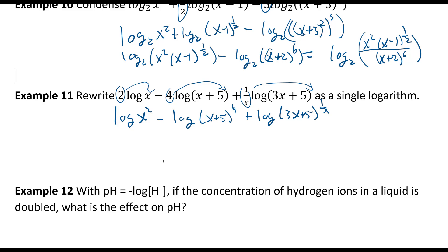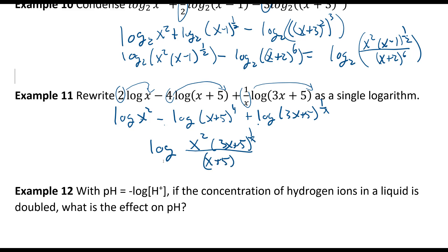At this point we can write this as a single log. The terms that are added go on top and the subtracted term goes in the denominator. So the result is log of x squared times 3x plus 5 to the one-half, over x plus 5 to the 4th power. And that's it.